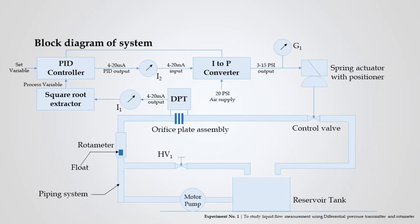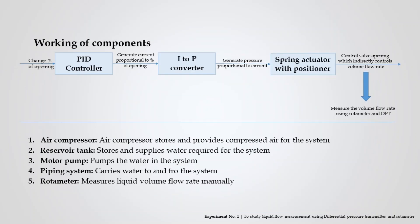The experimental setup for volume flow rate measurement is as shown. The volume flow rate of liquid Q flowing through the pipe can be controlled by changing the percentage opening of the control valve through the PID controller. The PID controller generates a current proportional to the percentage of opening. The current I to pressure P converter generates 3 to 15 psi pressure proportional to the applied current of 4 to 20 milliampere. The pressure is applied to a spring actuator with positioner, which controls the movement — generally up and down — of the poppet in the control valve, changing the volume flow rate of the liquid in the pipe. This volume flow rate is then measured using a rotameter and differential pressure transmitter.